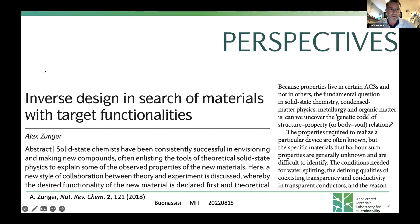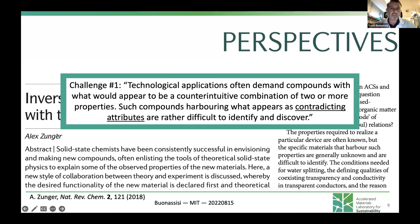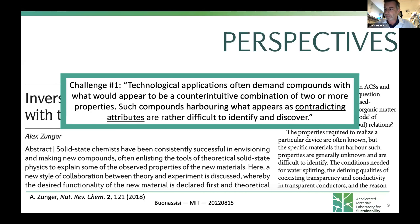Going back to this perspective piece, I pulled out three challenges. Challenge number one: many technological applications demand compounds that exhibit contradicting attributes. For example, transparent conducting oxides—if you want it transparent, you typically want a large band gap; if you want it conducting, you typically want high electron concentration and a small band gap. You want something easily manufacturable but stable for 20 years. You want high electrical conductivity but low thermal conductivity. These contradicting properties give rise to the needle-in-a-haystack phenomenon.